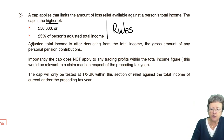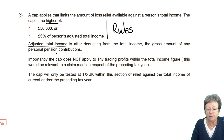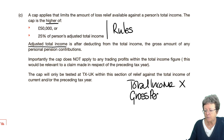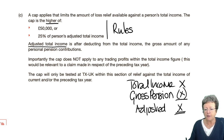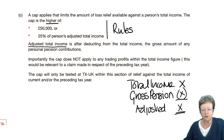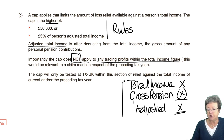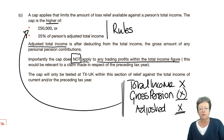How do we get adjusted total income? It's total income after deducting the gross amount of any pension contributions — so it's total income less gross pension contributions. More details of that are in the income tax chapter. We then multiply that adjusted total income figure by 25%. Importantly, this cap does not apply to trade profits within that total income figure, though you still need to do the calculation in order to work it out.